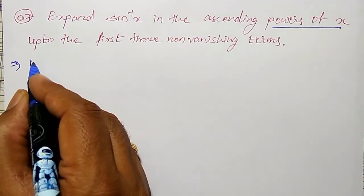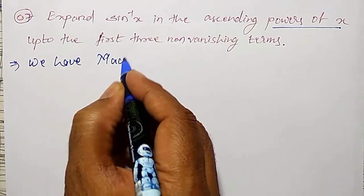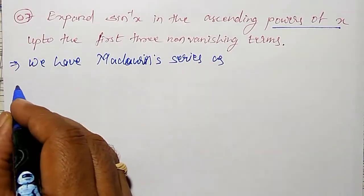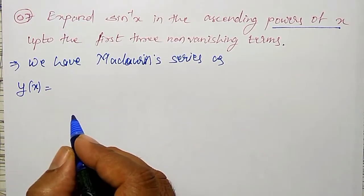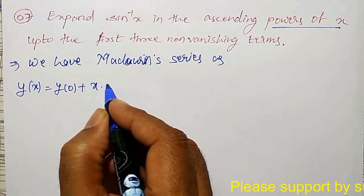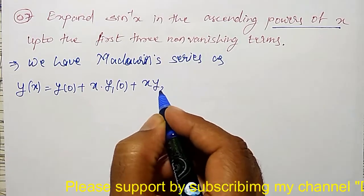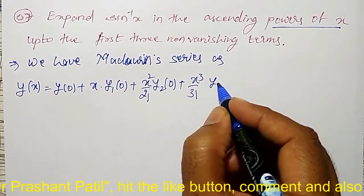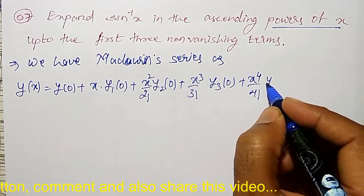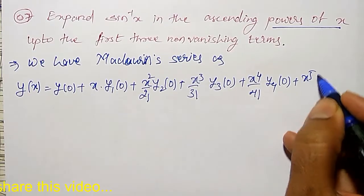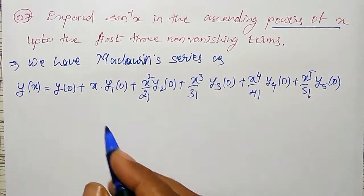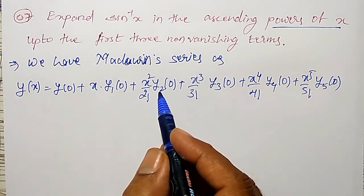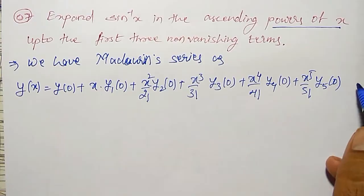The Maclaurin series states that if y(x) is a function that can be expressed in powers of x, it equals y(0) + x·y₁(0) + (x²/2!)·y₂(0) + (x³/3!)·y₃(0) + (x⁴/4!)·y₄(0) + (x⁵/5!)·y₅(0) + ... where y₁, y₂, y₃, y₄, y₅ are the first, second, third, fourth, and fifth derivatives of y evaluated at x = 0.